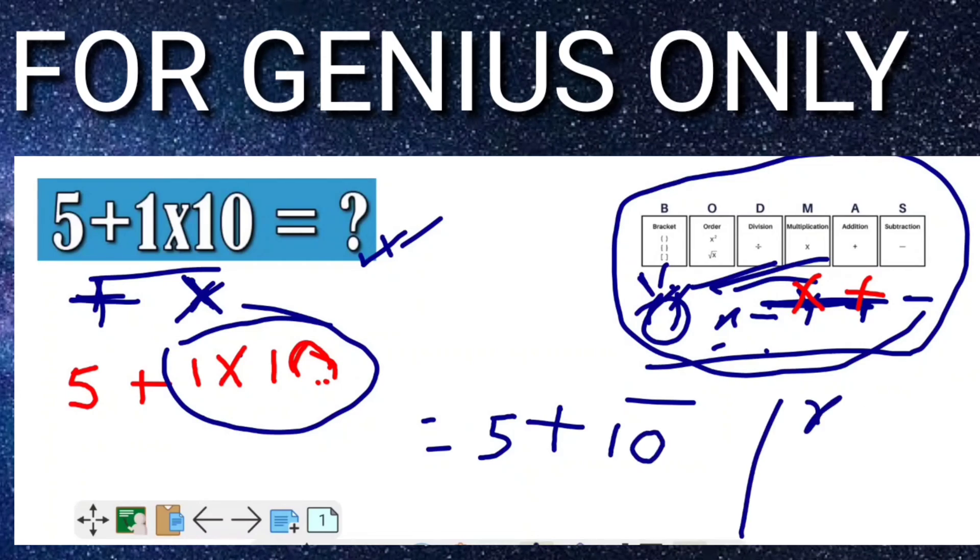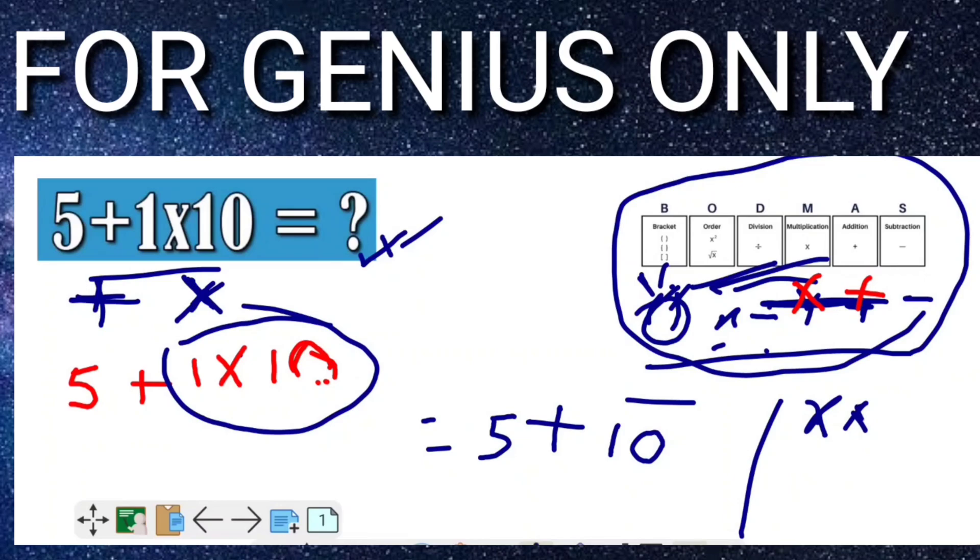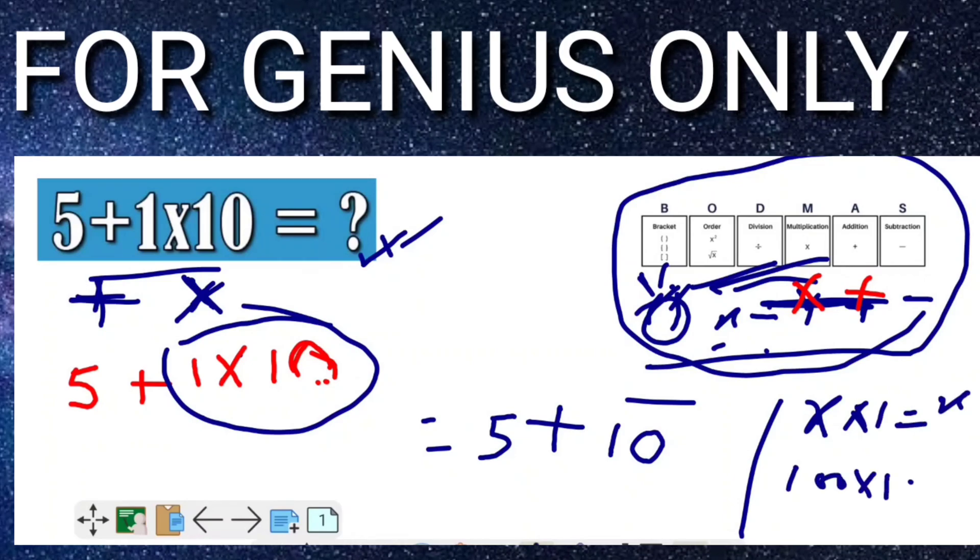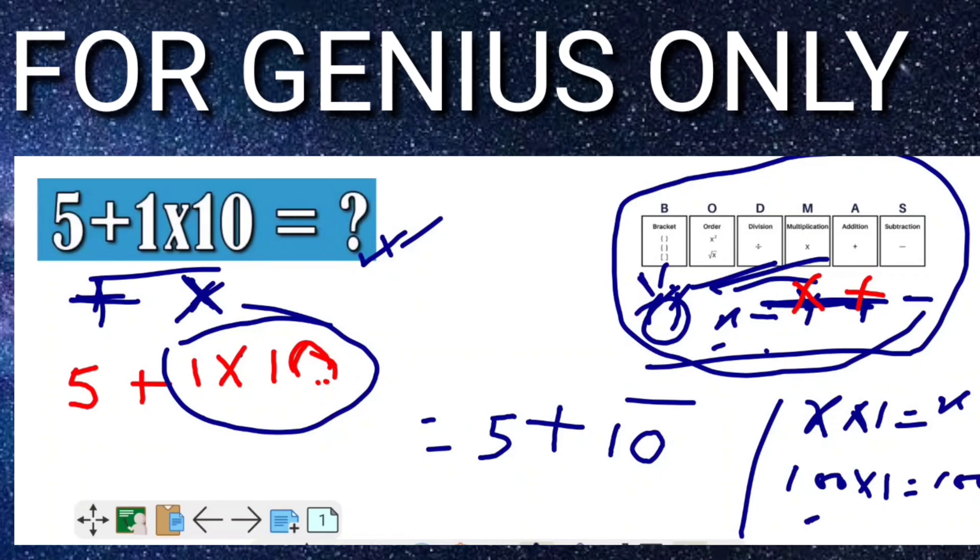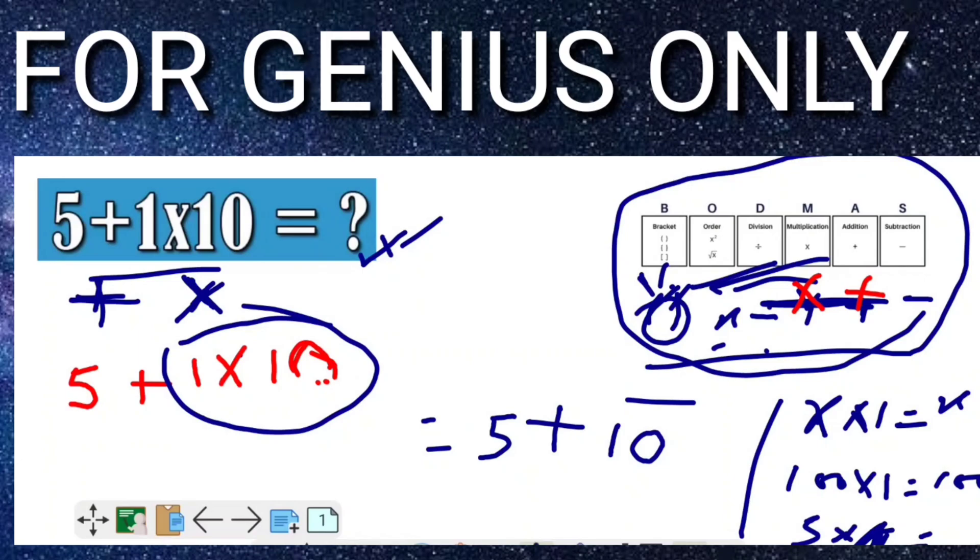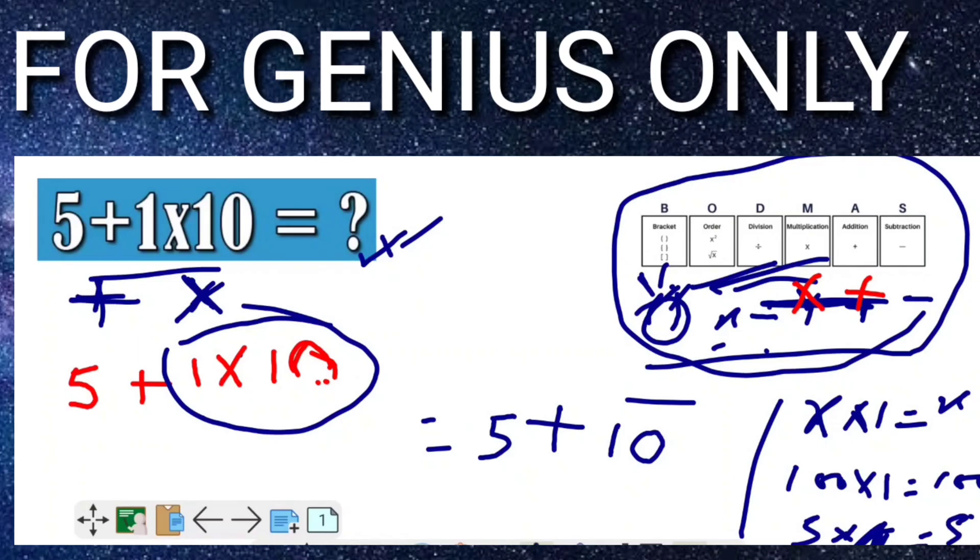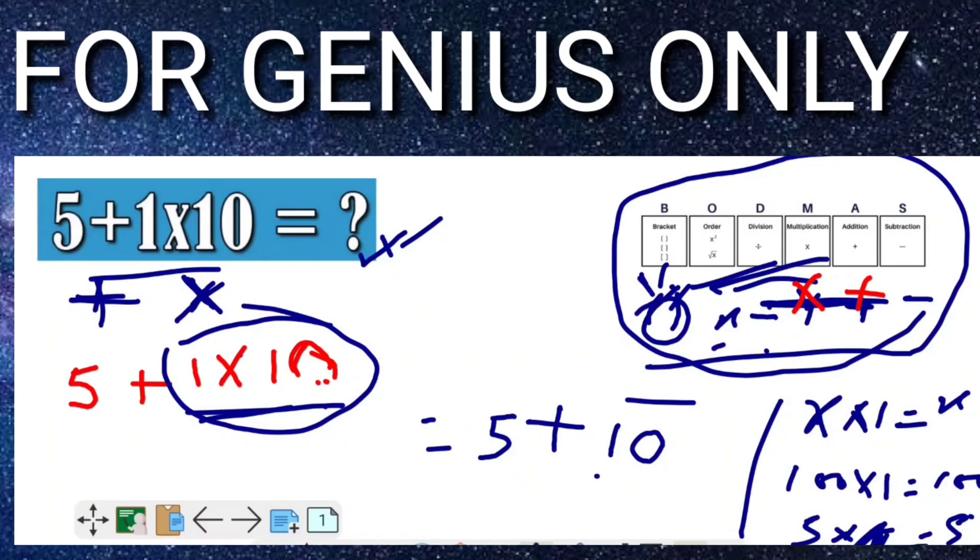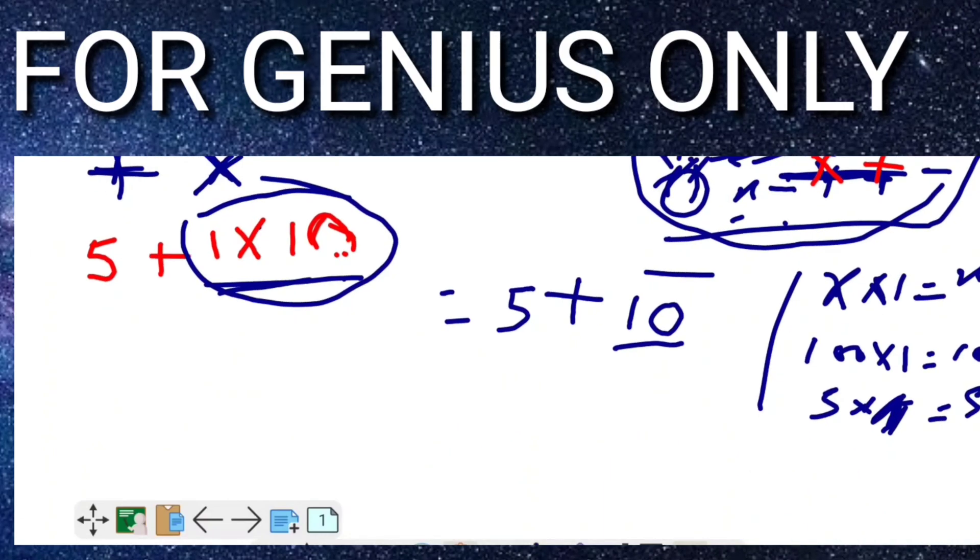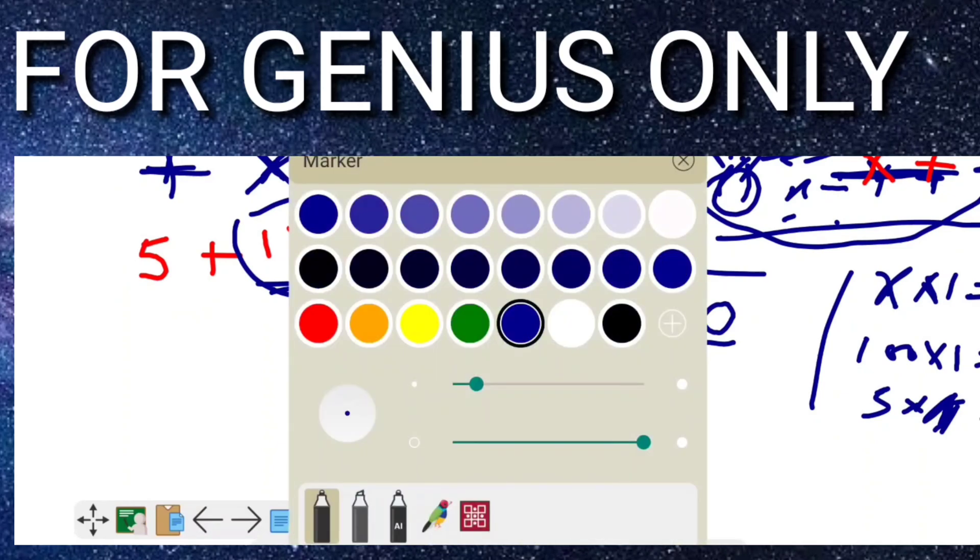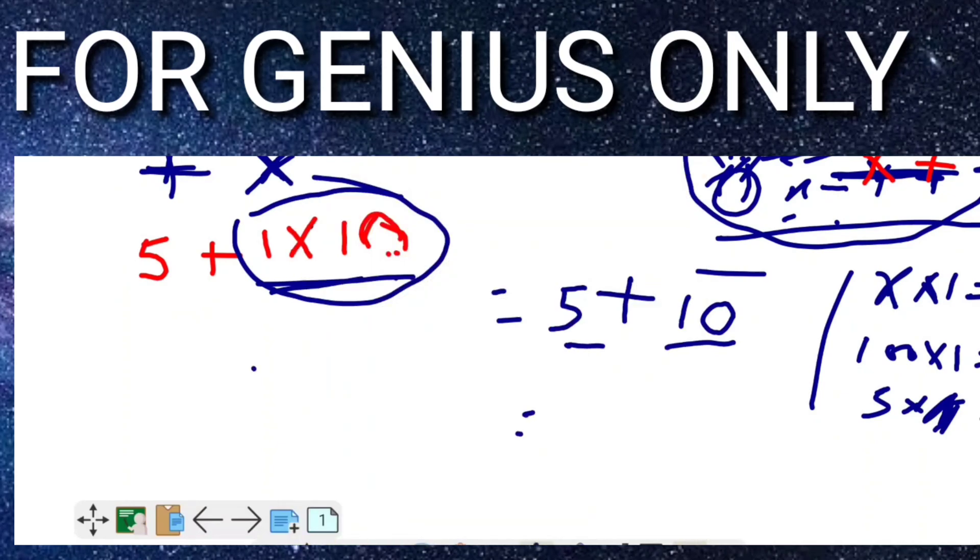If multiply x, x multiplied with 1 will come x. 100 multiplied with 1 will come 100, and 5 multiplied with 1 will come 5. Means 1 multiplied by 10 will come 10. What is the answer of this question? When I will add, when I will add 5 and 10, it will come answer 15.